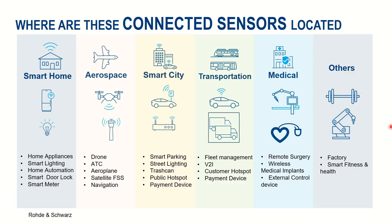We see a lot of exciting applications in different segments where manufacturers are trying to connect their products to the internet. Let's start with smart home applications, where you have a lot of home appliances getting connected: smart lighting, home automation, smart door locks, smart metering. This is a space that is developing rapidly, which means spectral crowding is also an issue we need to take care of.